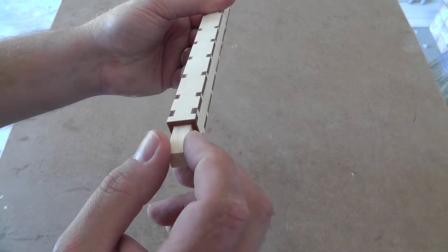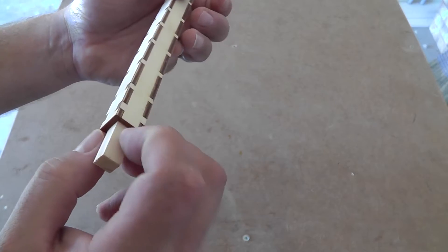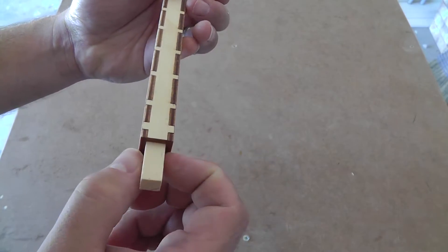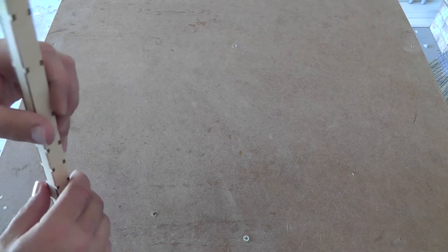Now the only thing you need to be careful of is glue coming out of the bottom here. You don't want glue down here because this piece needs to sit flush with the base.